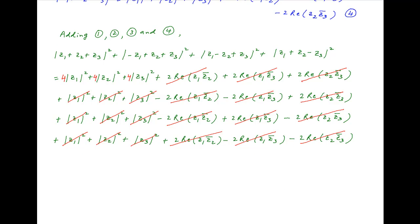Therefore the right hand side simplifies to four times, in brackets, the square of the absolute value of z1 plus the square of the absolute value of z2 plus the square of the absolute value of z3. And this is the required result.